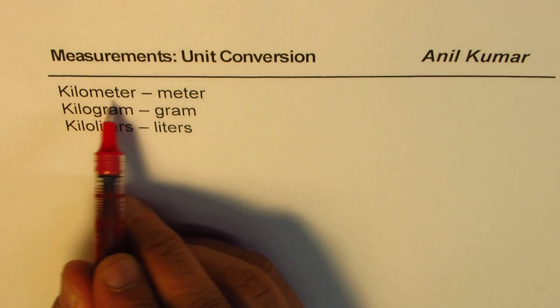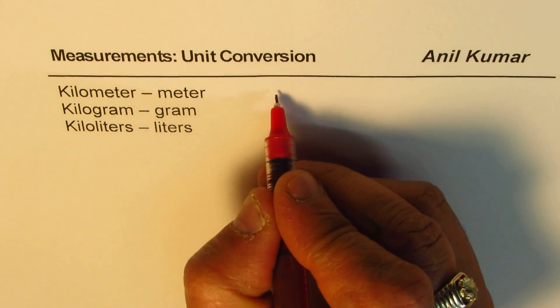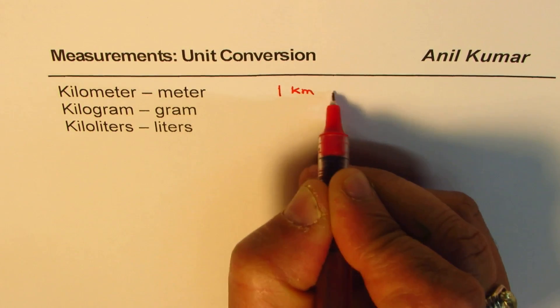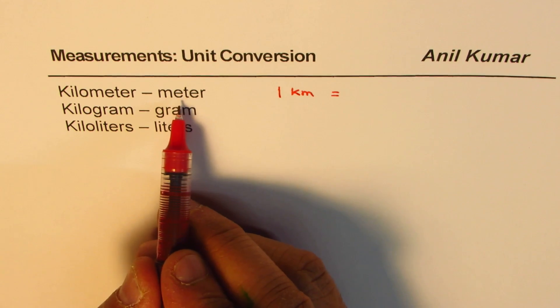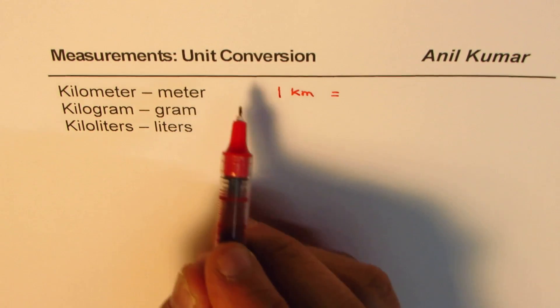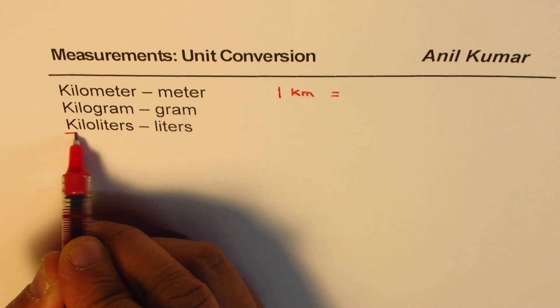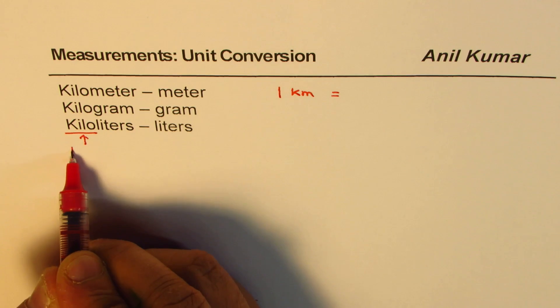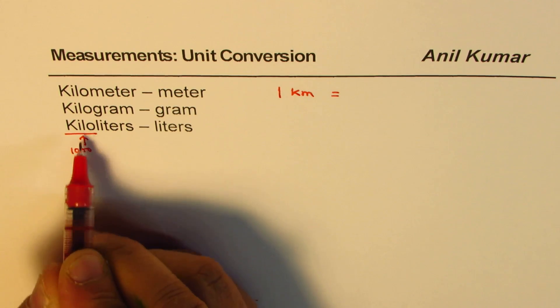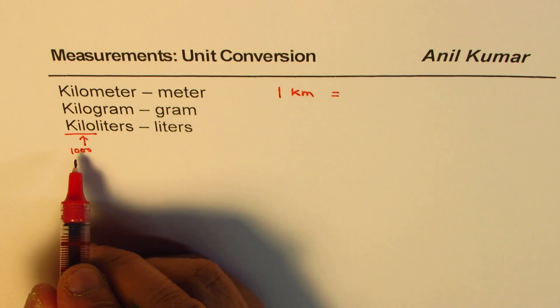So first one is kilometer to meter. We normally write this as 1 kilometer equals how many meters. Well, remember one thing that 1 kilo means thousand. So kilo itself means thousand.